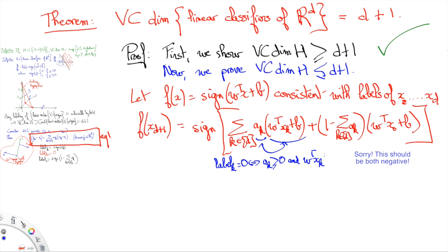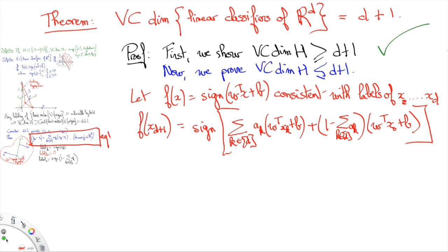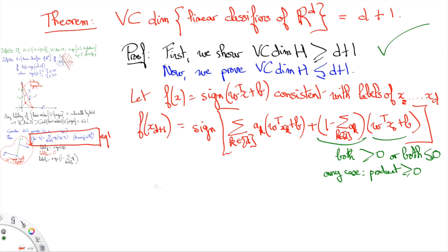If x_k has label 0, then both a_k and w^T x_k + b are negative, so their product is non-negative. Similarly, if x_k has label 1, both are non-negative, so their product is non-negative as well. This leads to the conclusion that the sum of all products a_k times (w^T x_k + b) is always non-negative. Similarly, (1 minus sum of a_k) times (w^T x_0 + b) is also always non-negative, which can be shown by considering the two cases where x_0 has label 0 or 1. Thus, the overall quantity within the sign function is necessarily non-negative. There are details regarding strict positivity that I advise you to look into, but I won't dwell on them in this video.